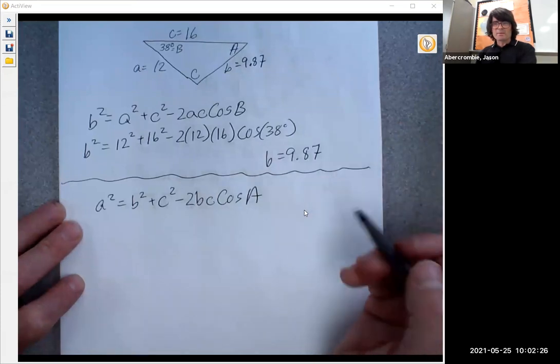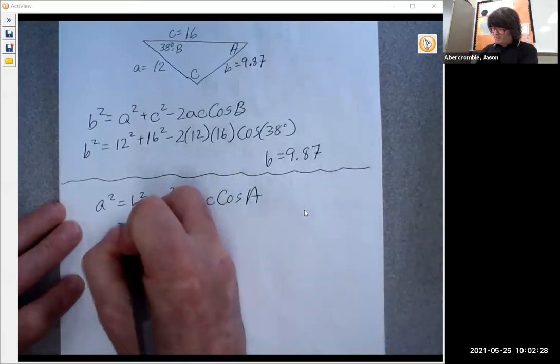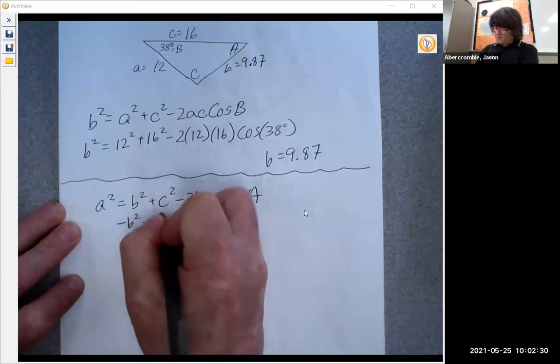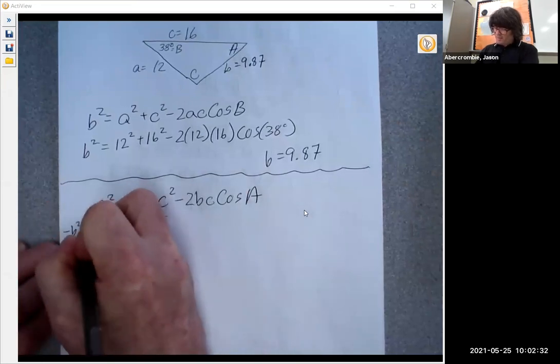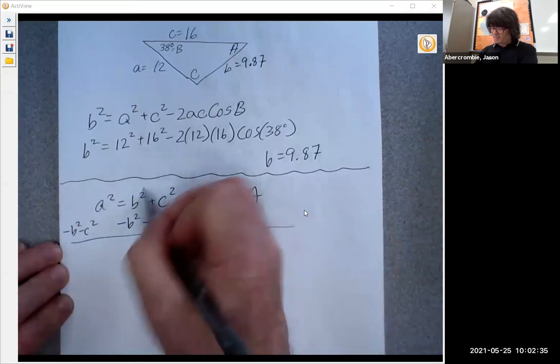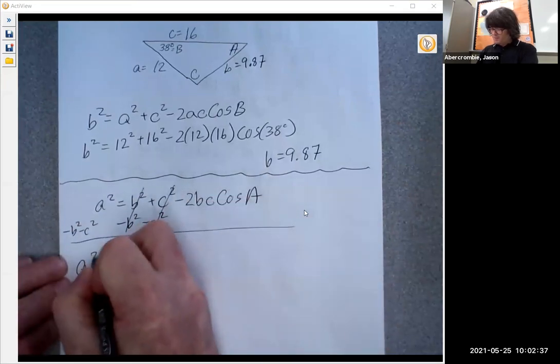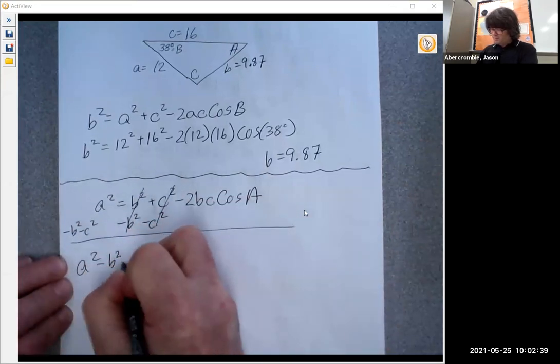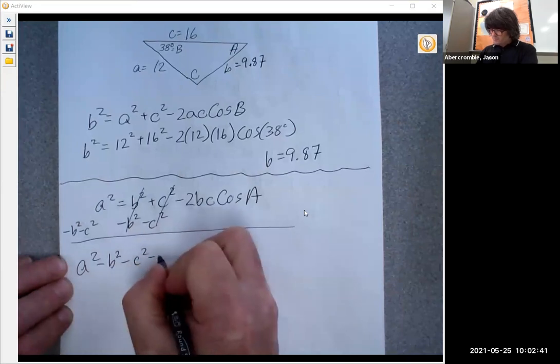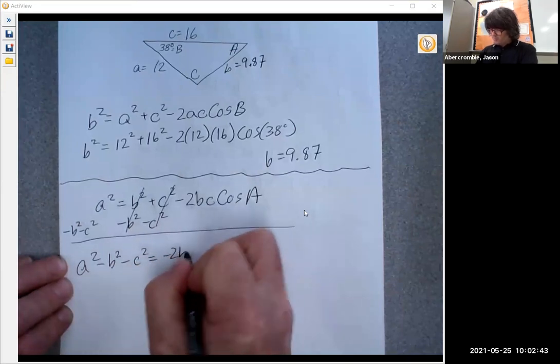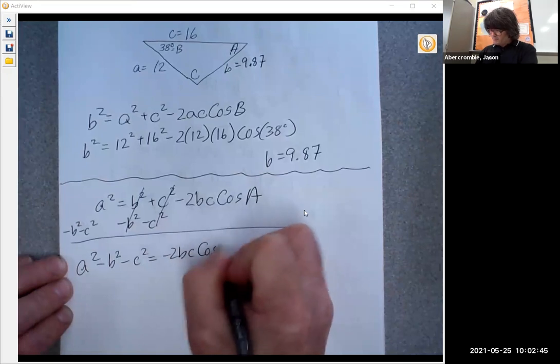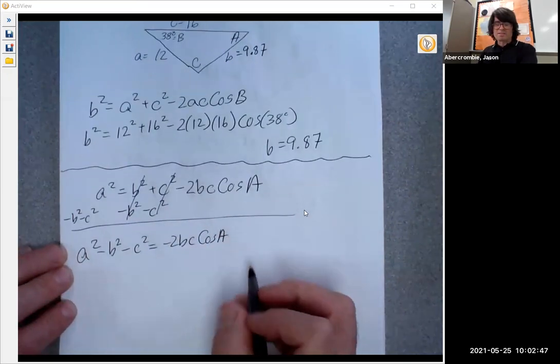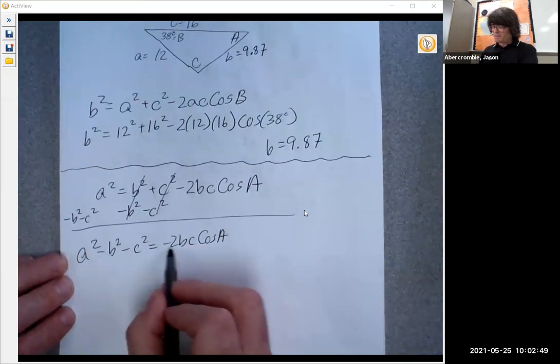And before I get started, I might want to rearrange this where I can get the cosine of A on one side by itself. So I'm just going to kind of go back to algebra one and solve this for cosine A. I'm just getting everything on the left side except for cosine A. We're going to divide by minus 2BC.